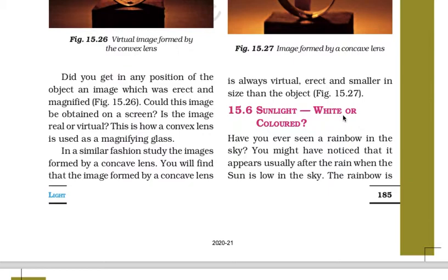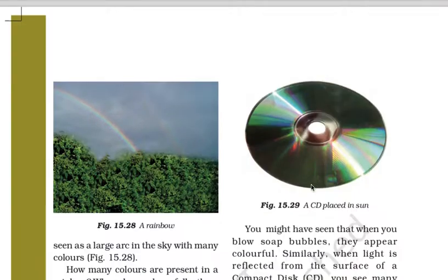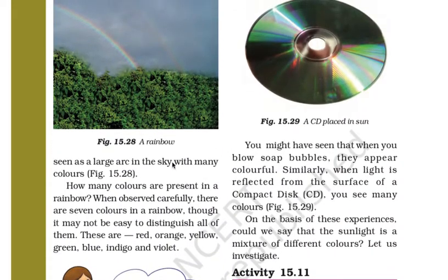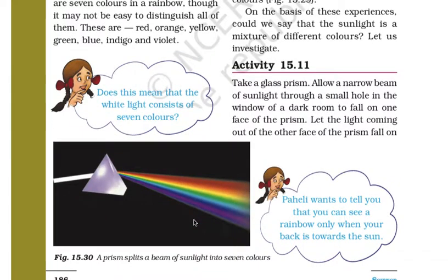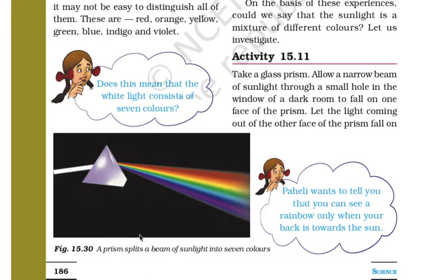Next is the topic: Sunlight — White or Colored? This is a question asked — is sunlight white or is it colored? Have you ever seen a rainbow in the sky? You might have noticed that it appears usually after the rain. When the sun is low in the sky, the rainbow is seen as a large arc with many colors. How many colors are present in a rainbow? When observed carefully, there are seven colors: red, orange, yellow, green, blue, indigo and violet. You can also perform an activity with the help of a prism to split the beam of sunlight into these seven colors.